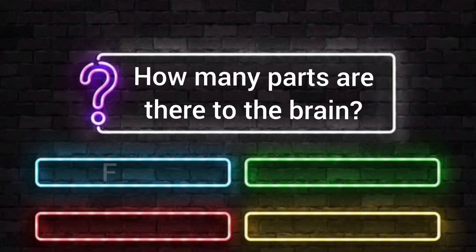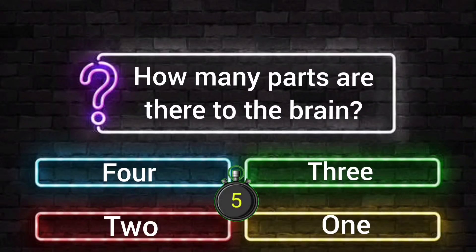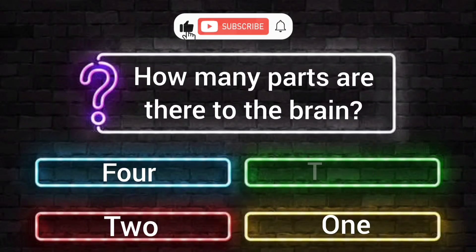How many parts are there to the brain? Option A: 4. Option B: 3. Option C: 2. Option D: 1. Your time starts now. The answer is Option B, 3.